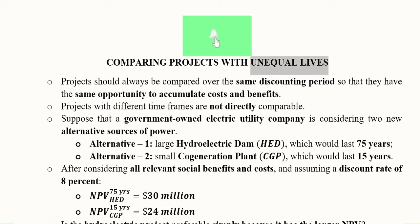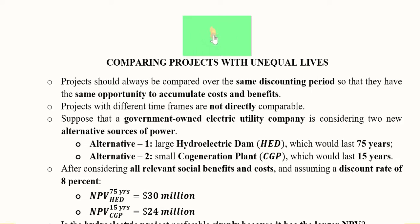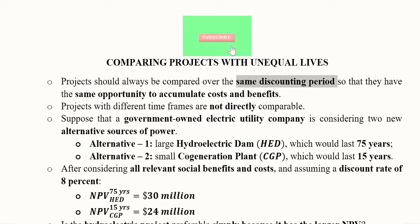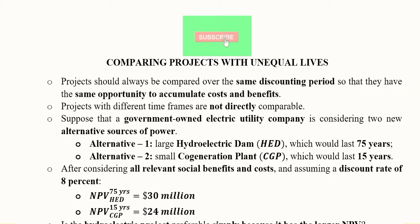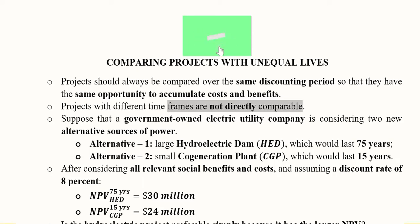In this video we will try to compare projects with unequal lives, because in real life projects are not likely to have the same lifespan. There are basically two methods to do the comparison. We should primarily try to compare projects with the same discounting period, but in real life that may not always be the case. So we need alternative methods, since the projects are not directly comparable in terms of calculating their NPVs.